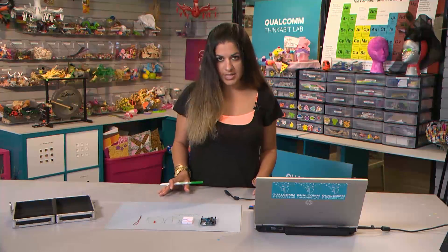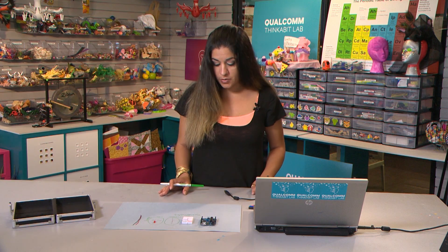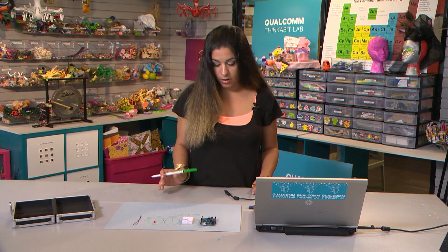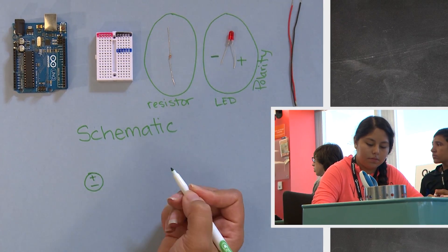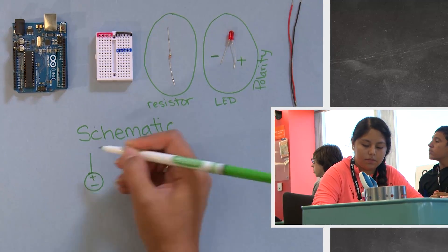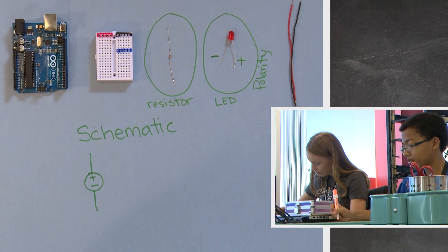Now, what is one thing that all circuits have in common? Power. So let's go ahead and draw the symbol for power. Draw a circle, have the positive side and negative side, a wire coming out of positive and a wire coming out of negative.